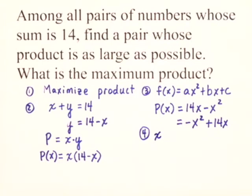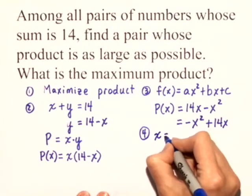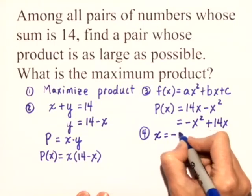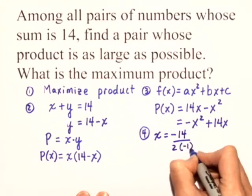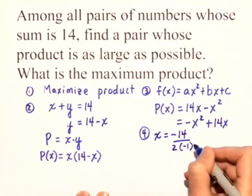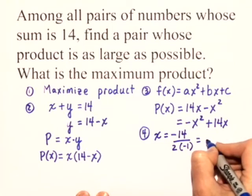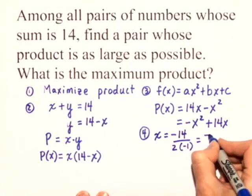The maximum value occurs at the x value of the vertex. x is equal to negative b, in this case is 14, over 2 times a, which is negative 1. So in this case, x is equal to positive 7.